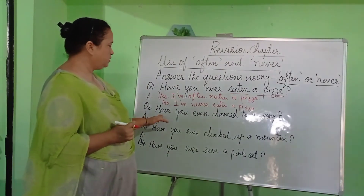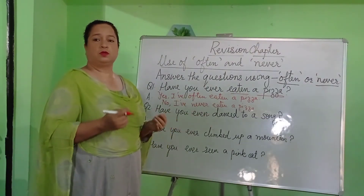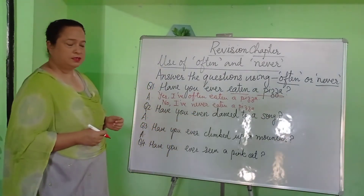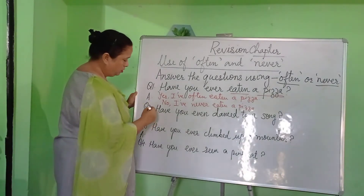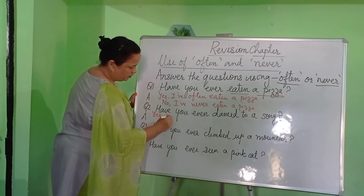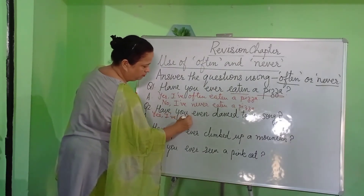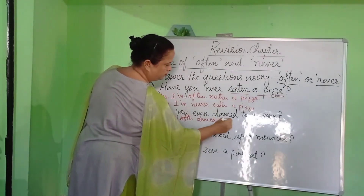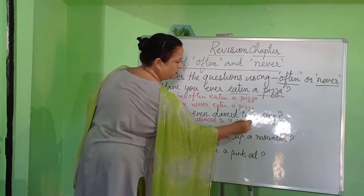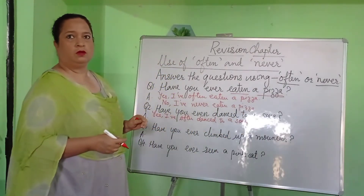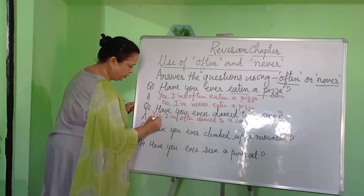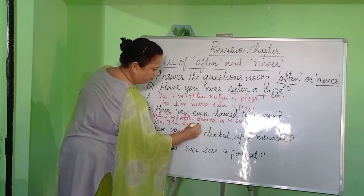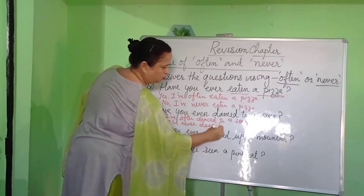Likewise, let us see the next question. Have you ever danced to a song? Many children love dancing — as soon as the song starts you start dancing. So if you have ever danced to a song, you begin your answer using Yes: I have often danced to a song. But if you are a shy person, you may listen to a song but never dance to it. So you write: No, I have never danced to a song.